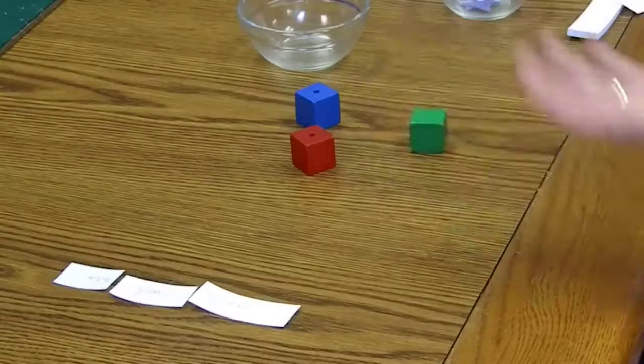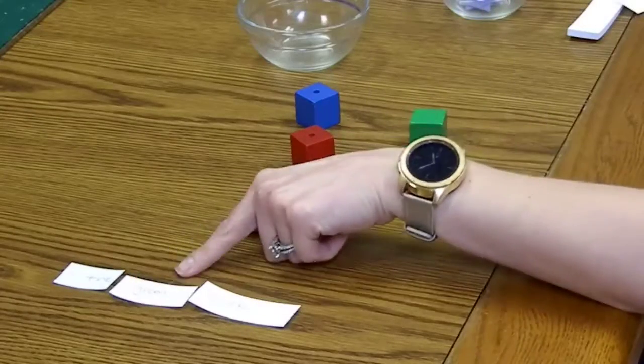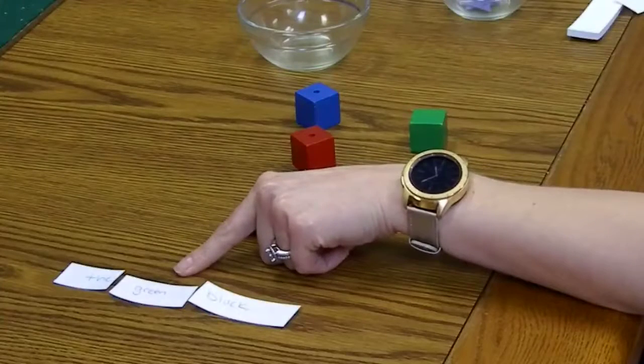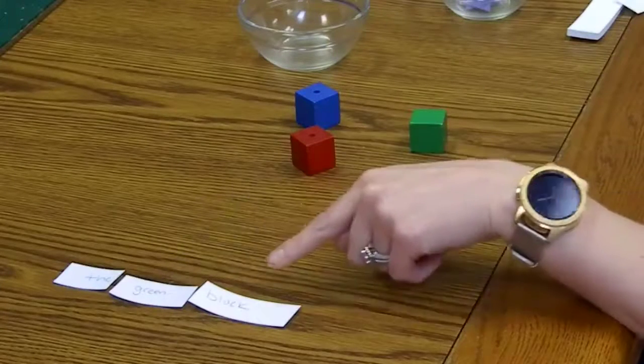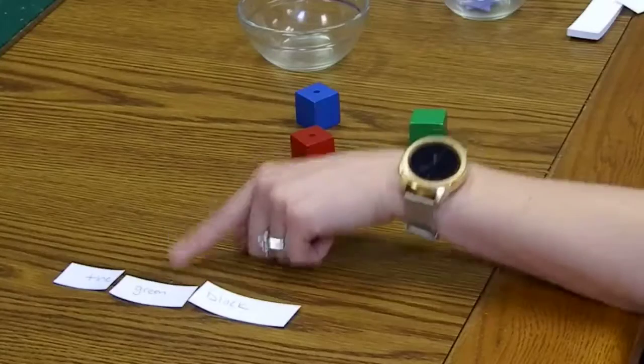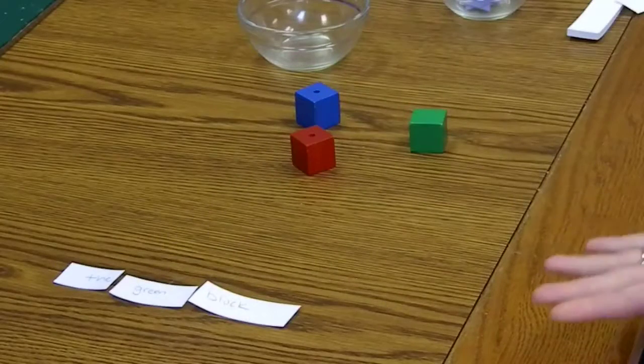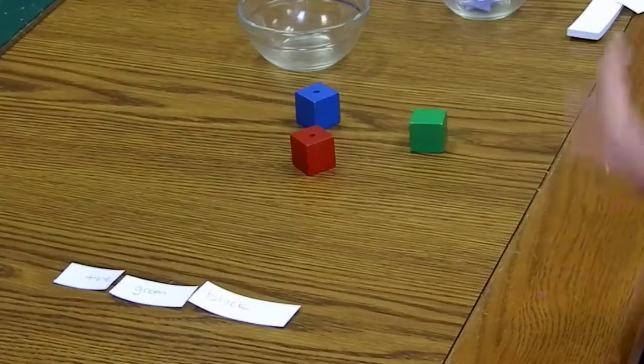The reason you weren't able to give me what I wanted the first time is because I was missing this word right here. This word describes my noun, and you have to have this word so that you know exactly which block I'm talking about, right? Well,